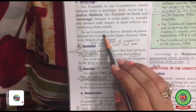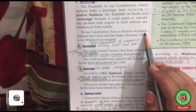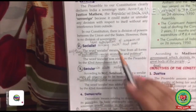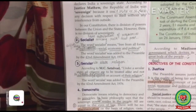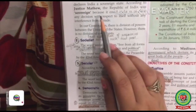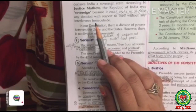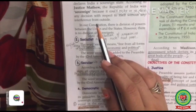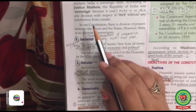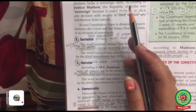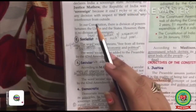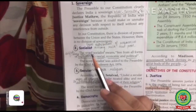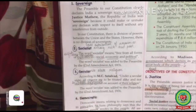In our Constitution there is a division of powers between the union and the states; however, there is no division of sovereignty. This means India is free from external control and can frame its own policies. For example, in the situation of COVID-19, the Prime Minister of India announced lockdown. The Prime Minister need not ask external bodies for this decision — the government can frame its own policies for security purposes.